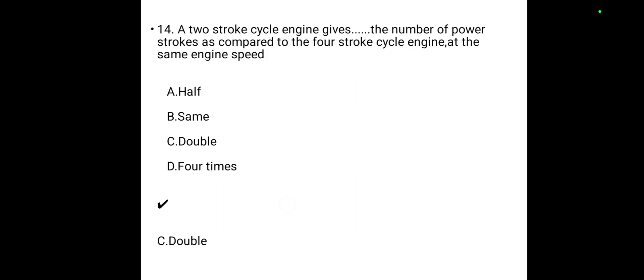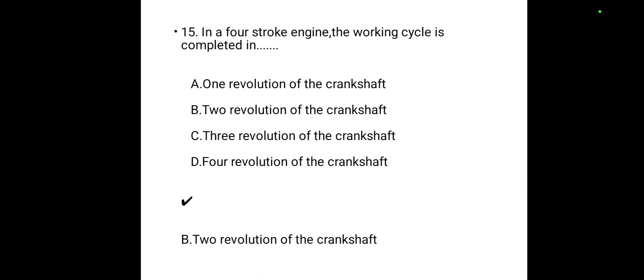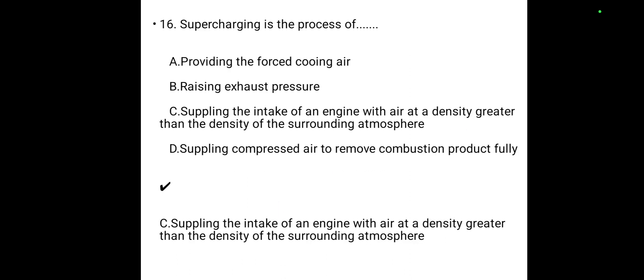A two-stroke cycle engine gives double the number of power strokes compared to a four-stroke cycle engine at the same engine speed. In a four-stroke engine, the working cycle is completed in two revolutions of the crankshaft. Supercharging is the process of supplying the intake of an engine with air at a density greater than the density of the surrounding atmosphere — answer is C.